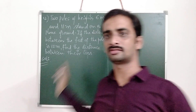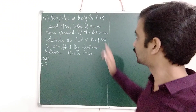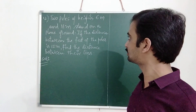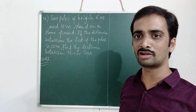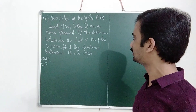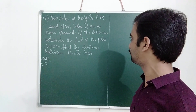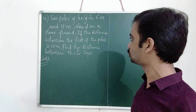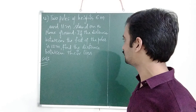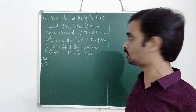Let us see this problem. Two poles of height 6m and 11m stand on a plain ground. If the distance between the feet of the two poles is 12m, find the distance between the tops.